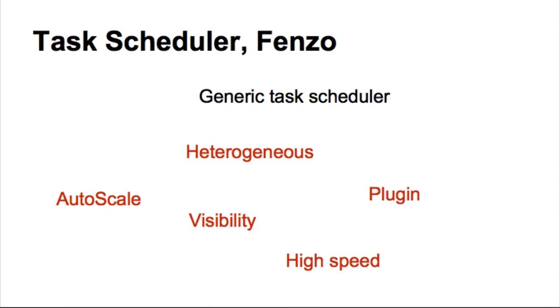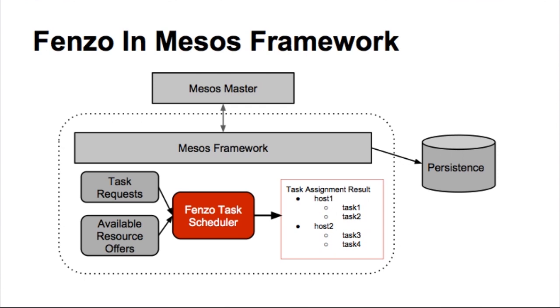How does Fenzo fit into a framework? Eventually, a framework has a bunch of tasks to run, and it has a bunch of offers that it got from Mesos. You feed that into Fenzo, and it gives you a task assignment result that the framework can then use to launch through the Mesos driver.